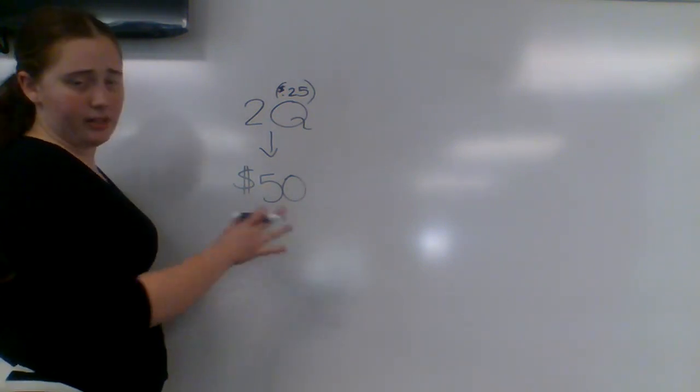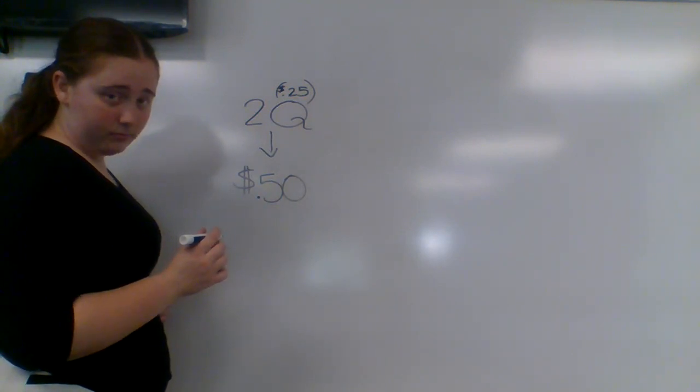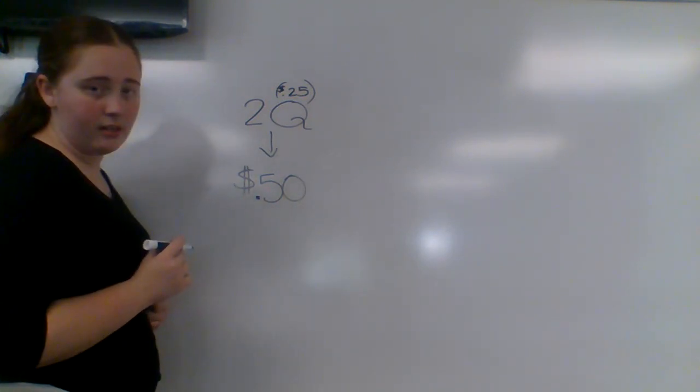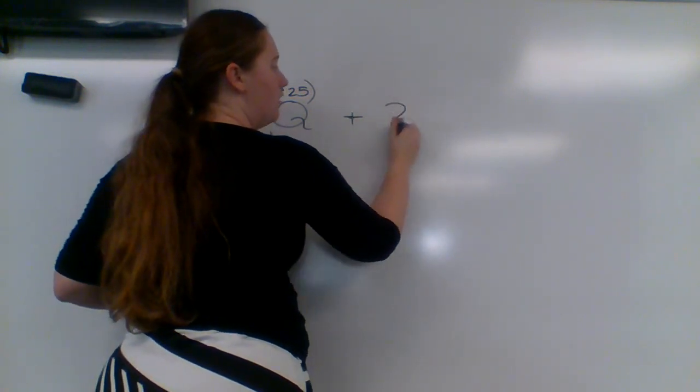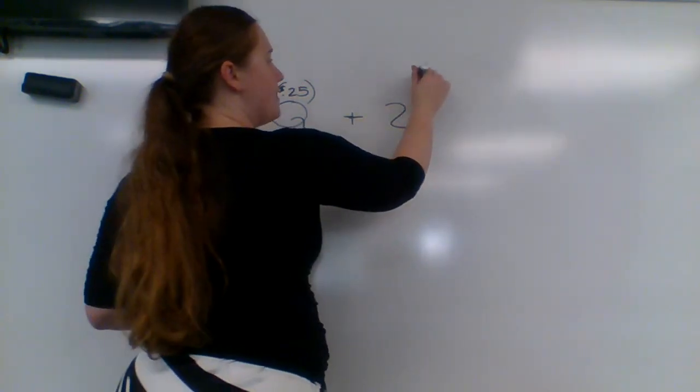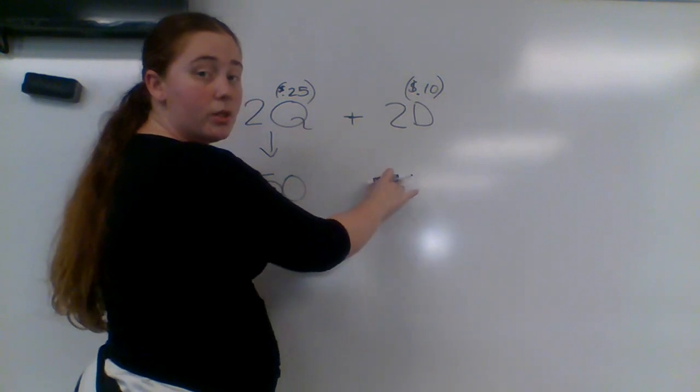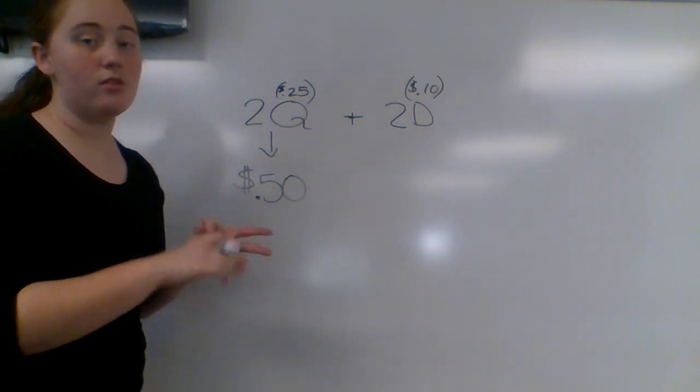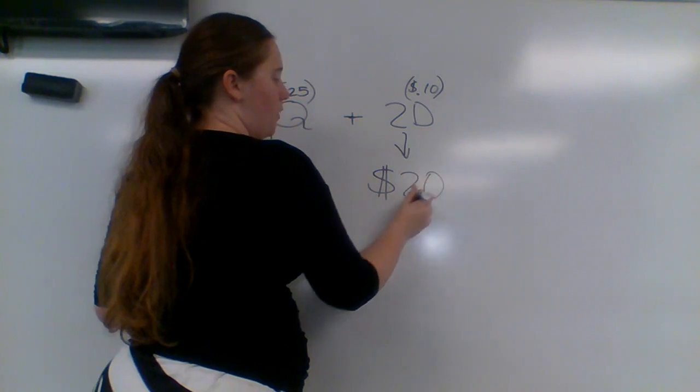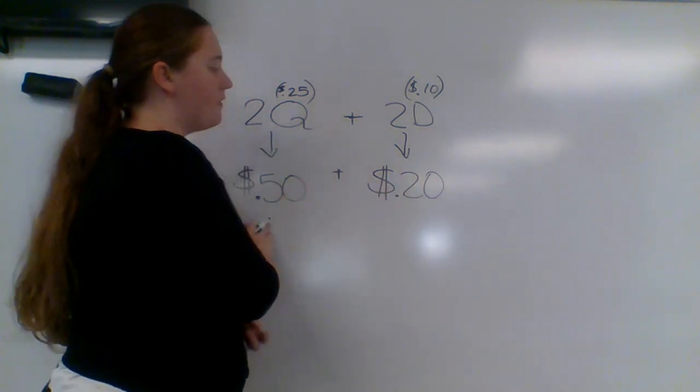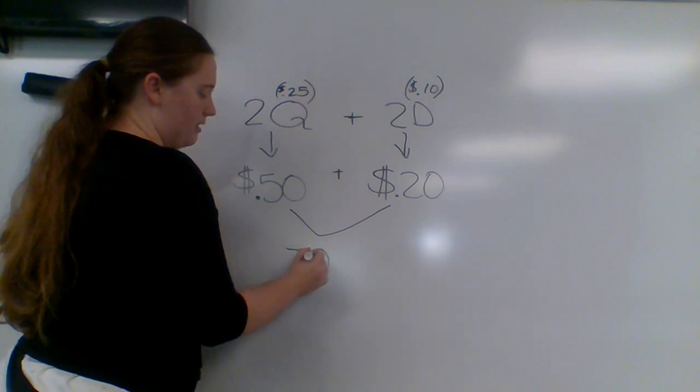I know I just put $50. I'm supposed to put 50 cents. We put a decimal point right here. And now it's 50 cents. So, I have 2 quarters plus 2 dimes. Put D for dime. And I know a dime is worth 10 cents. Two of those, if I count by 10, 2 times or 10 times 2, I have 10, 20. So, I have 20 cents. So, I have 50 cents plus 20 cents. And 50 cents plus 20 cents is 70 cents.